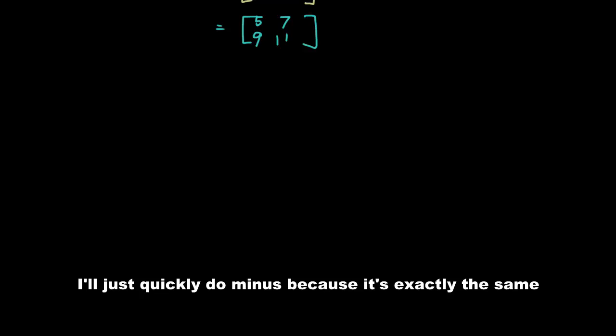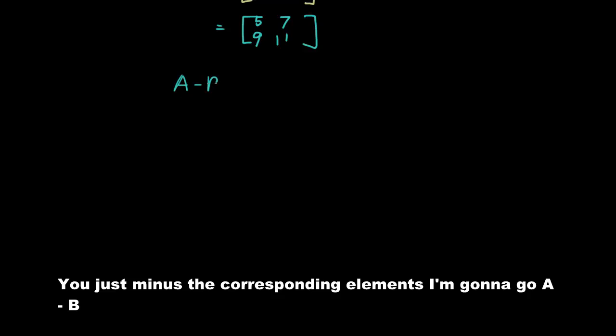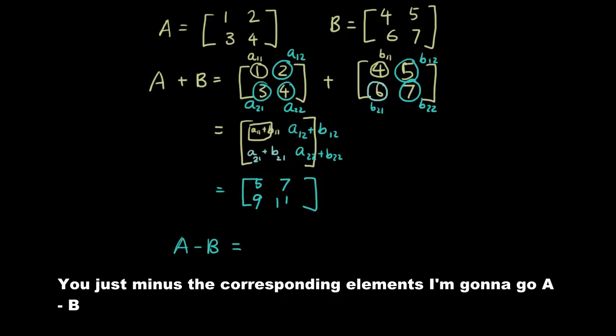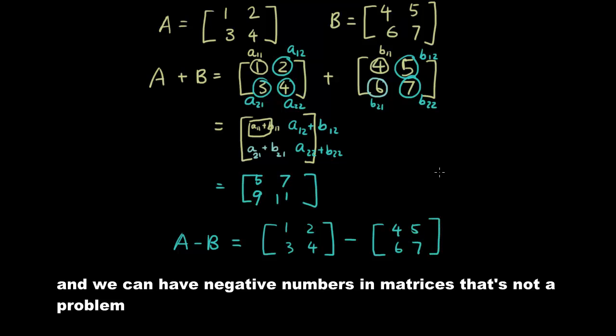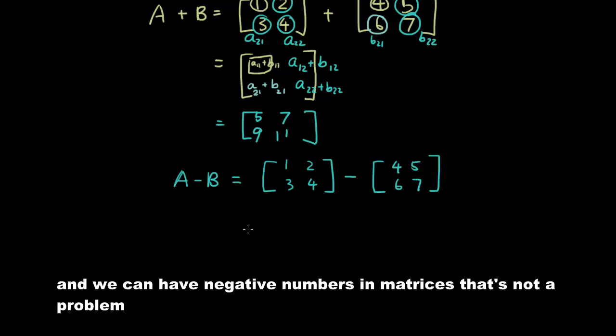I will just quickly do minus because it's exactly the same. You just minus the corresponding elements. So I'm going to go A minus B equals and then I have 1, 2, 3, 4 minus 4, 5, 6, 7 and we can have negative numbers in matrices. That's not a problem.